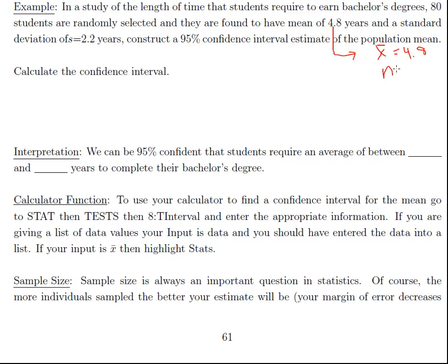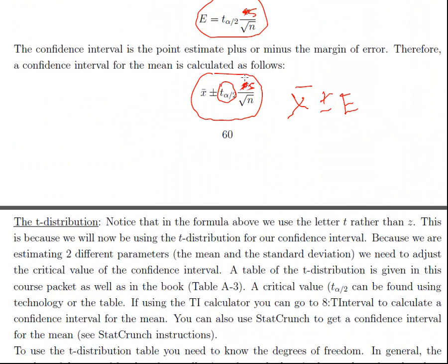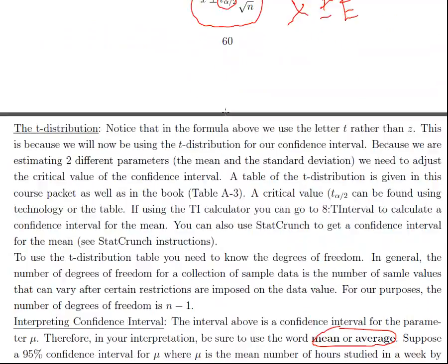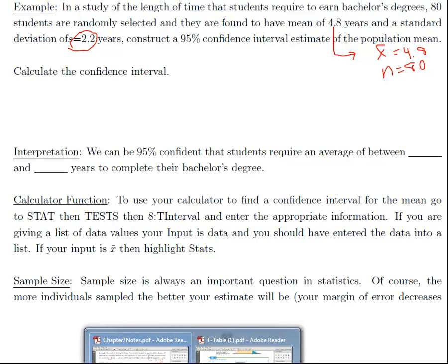Our n is 80 and our s is 2.2 years, and we're going to need all that to get a 95% confidence interval. So I have all the information that I need to apply this formula. I just need to use my table to come up with the critical value for t.